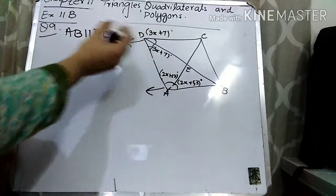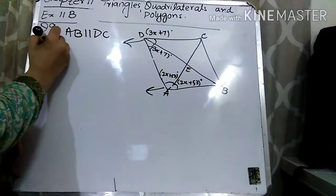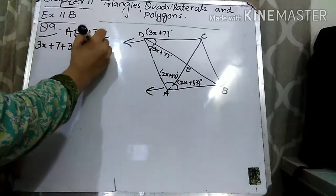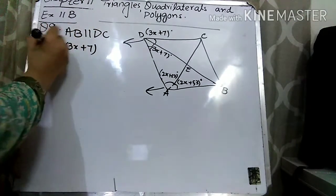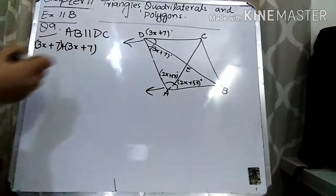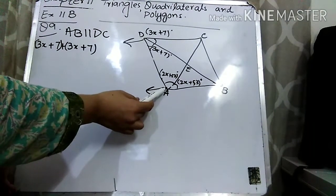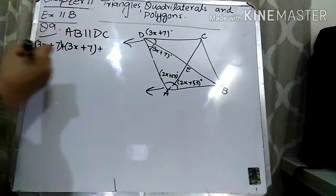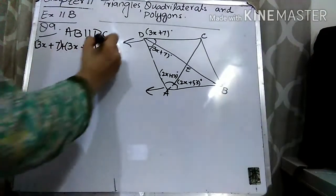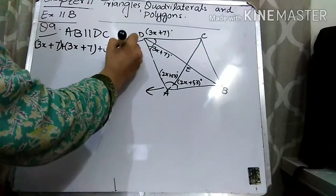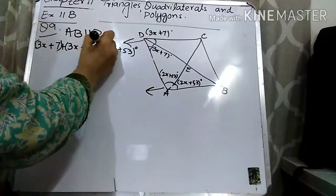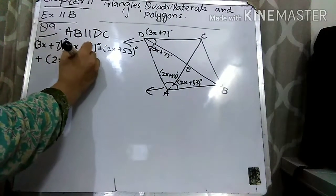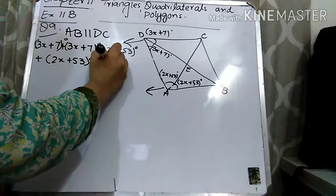So this is 3x plus 7 and this is 3x plus 7. We can write: 3x plus 7 plus 3x plus 7. You can see that this whole angle is divided into these parts, and in the same way this whole angle is divided into these parts. So plus 2x plus 53 and plus 2x plus 53 is equal to 180 degrees.